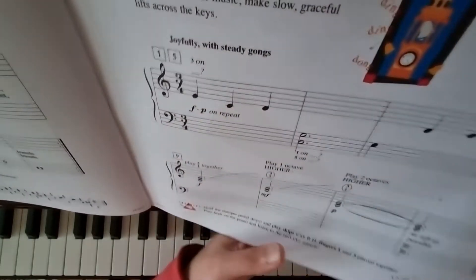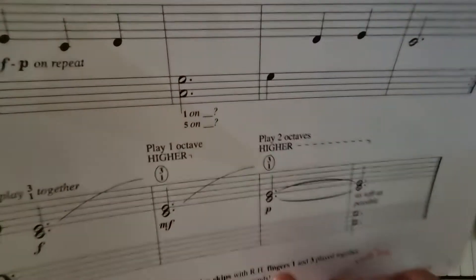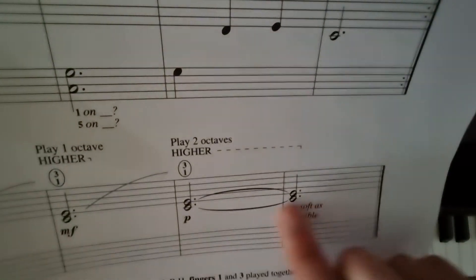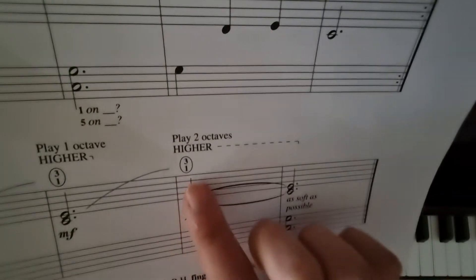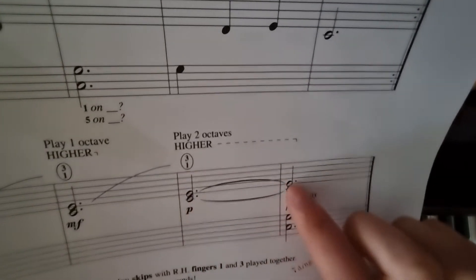Okay, we've got another tie over here. It is over here, which means how many times are we going to play these two notes? Once. We're not going to play it again.